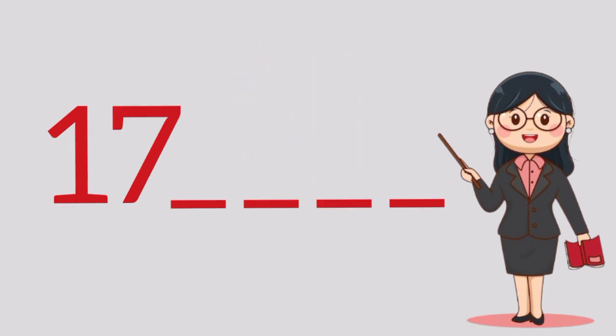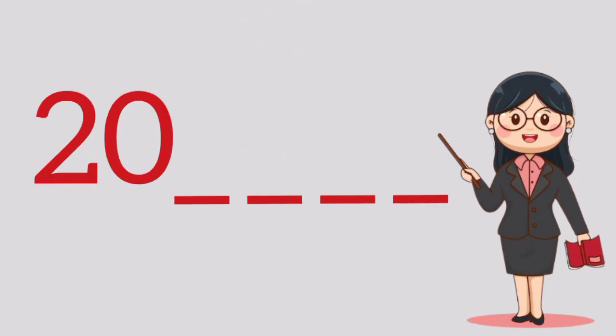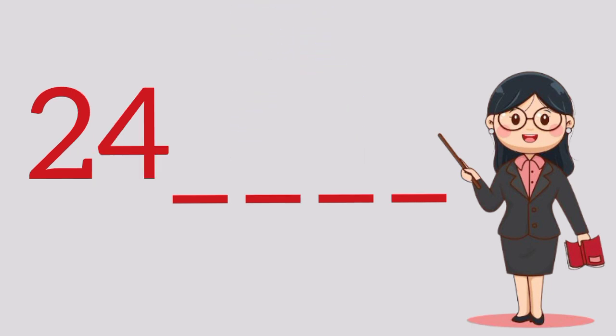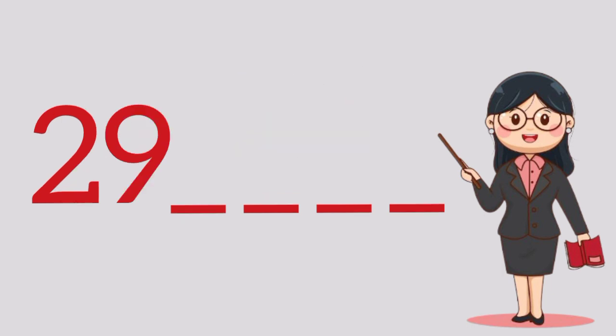What number comes after 17? It's the number 18. What number comes after 20? It's the number 21. What number comes after 24? It's the number 25. What number comes after 29?